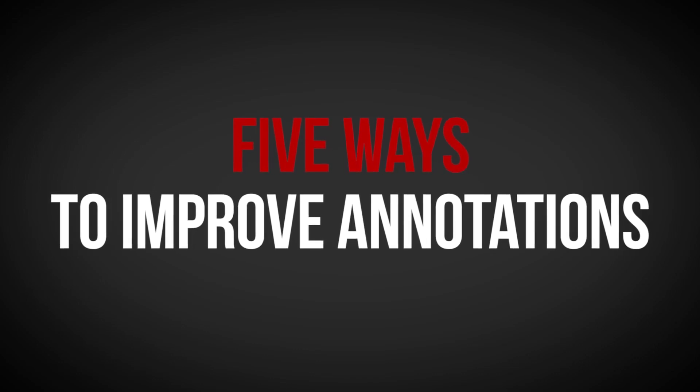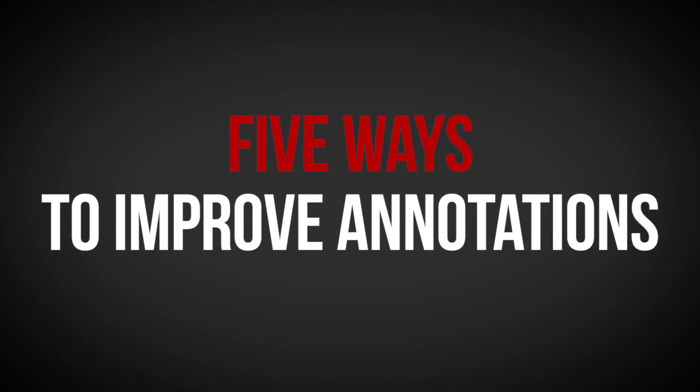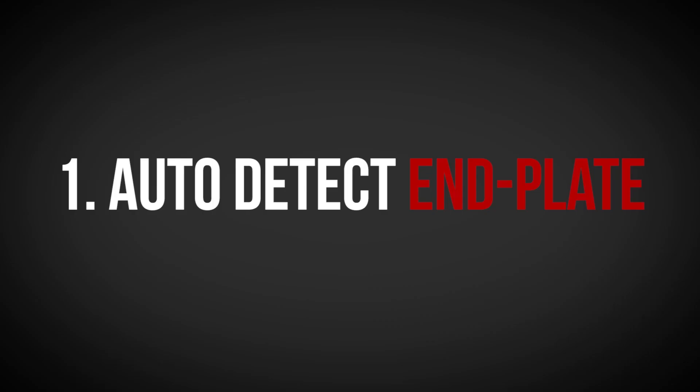Here's a list of five things to make annotations easier for the rest of us. Number one: have them auto-detect an end plate. I know, sounds freaking crazy, doesn't it? If Facebook can auto-detect not only where the face is but also who's in the picture, then why can't YouTube detect when you have the word 'subscribe' or 'previous videos' or whatever? It sounds pretty easy.